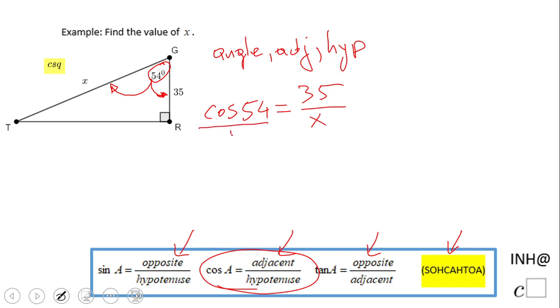I think I would like to put the 1 down here and do cross multiplication. x times cosine of 54 equals 1 times 35. So x times cosine of 54 equals 35.